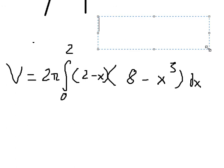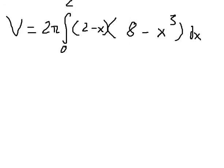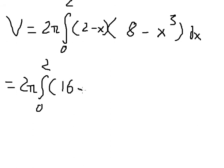That is the shell method. Now we need to expand this. 2 multiplied by 8 gives 16, and 2 multiplied by negative x cubed gives negative 2x cubed. Then negative x times 8 gives negative 8x, and negative x times negative x cubed gives x to the power of 4. So the integrand is 16 minus 2x³ minus 8x plus x⁴, dx.